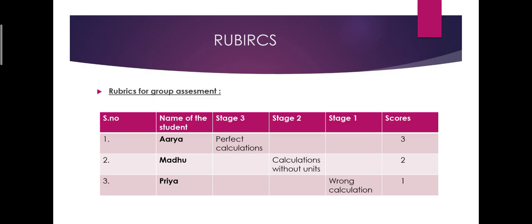Then rubrics for group assessment. Here the group assessment is done by the teacher. There are five columns: serial number, name of the student, stage three, stage two, stage one. For stage three, scores are three marks. Stage two, two marks. Stage one, scores are one mark. Here the student Arya, she comes under stage three because she did perfect calculation. That's why she scored three marks.